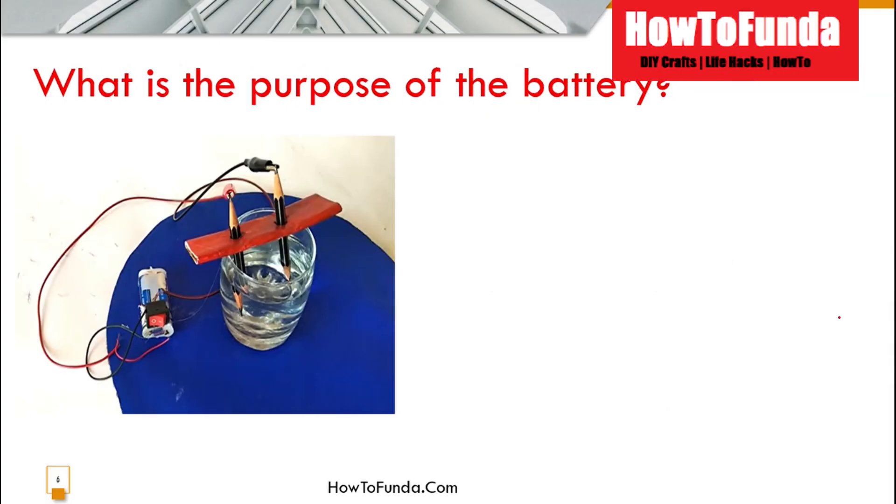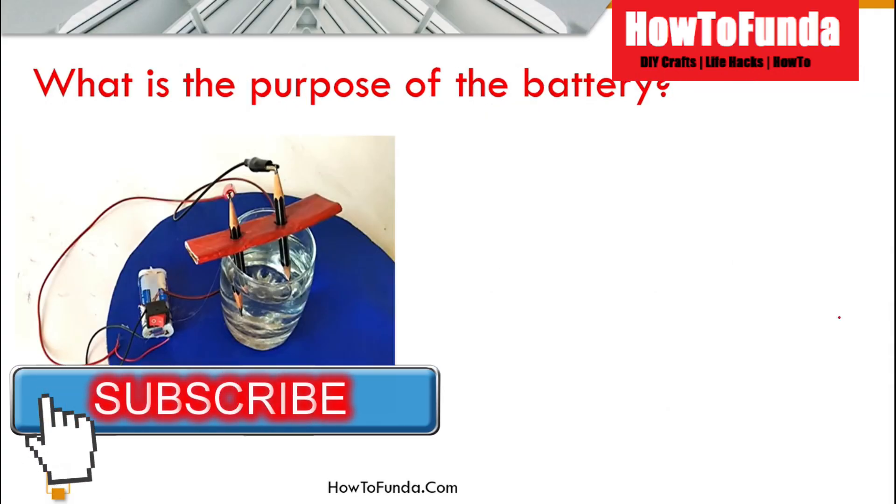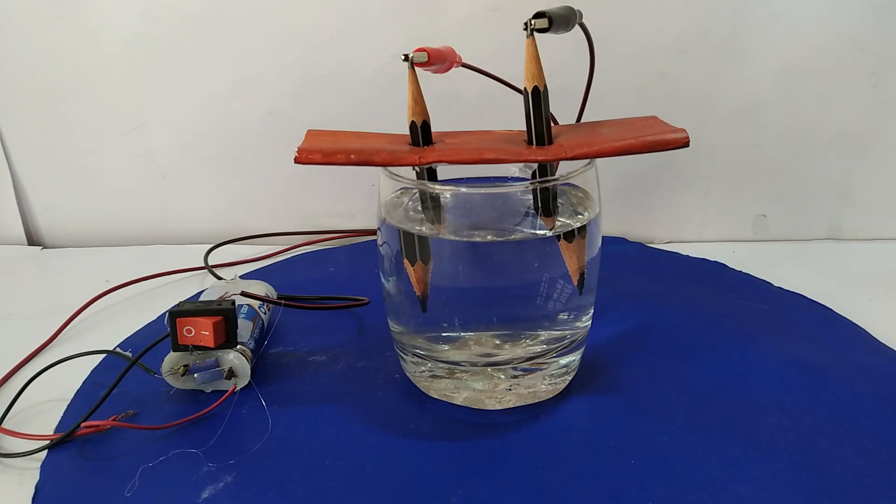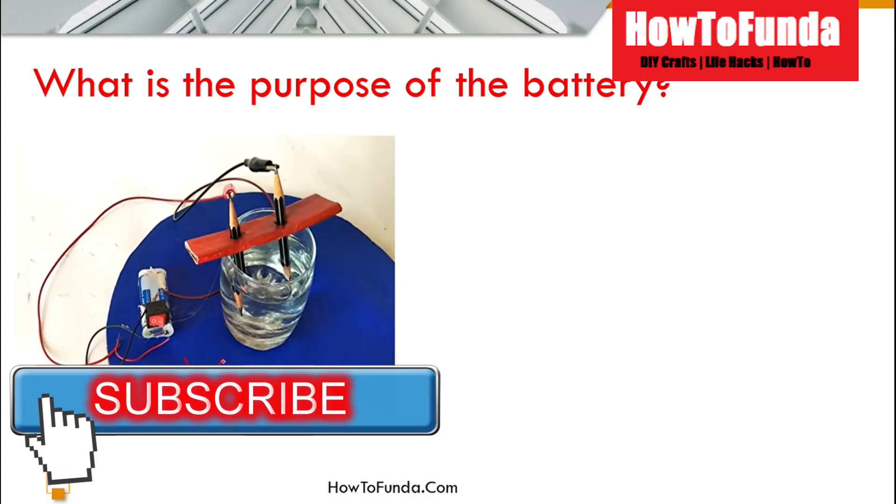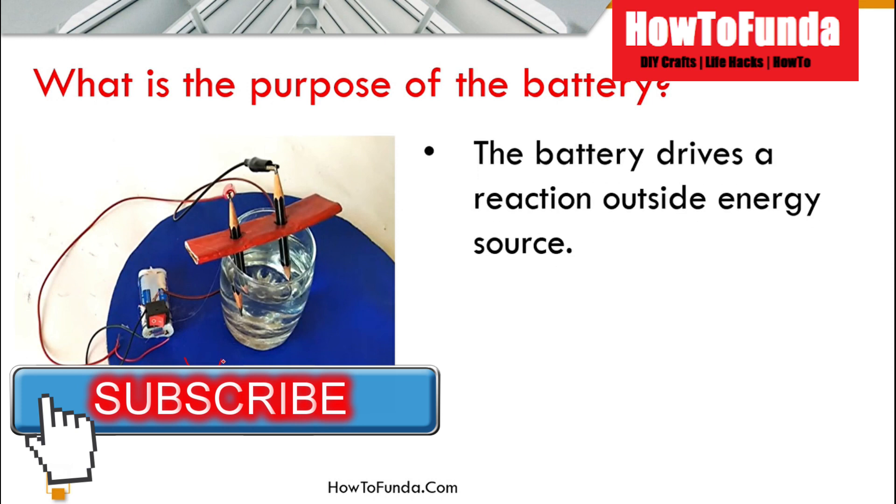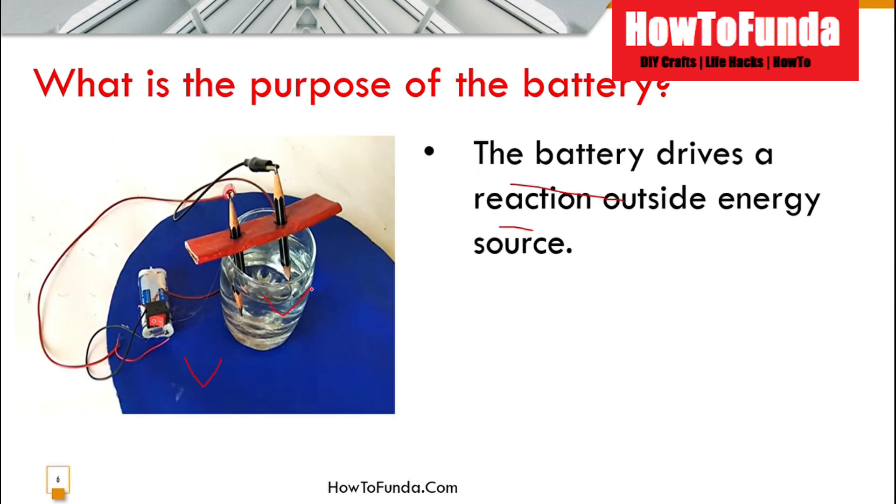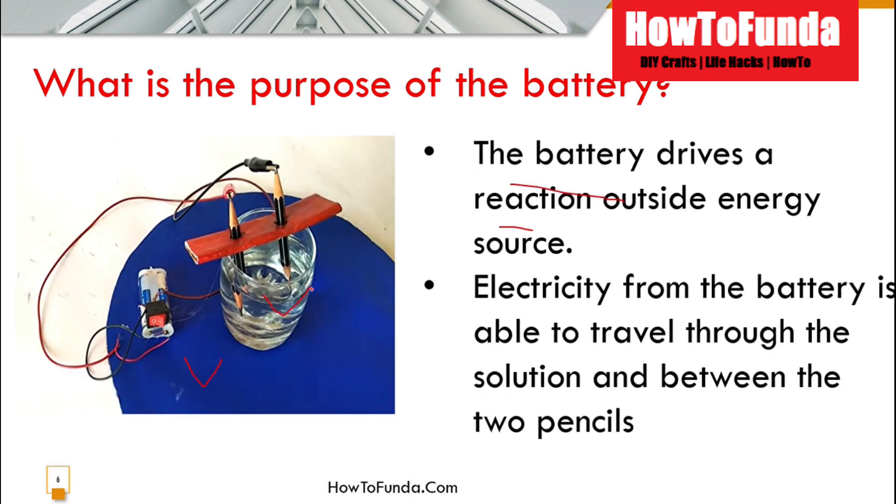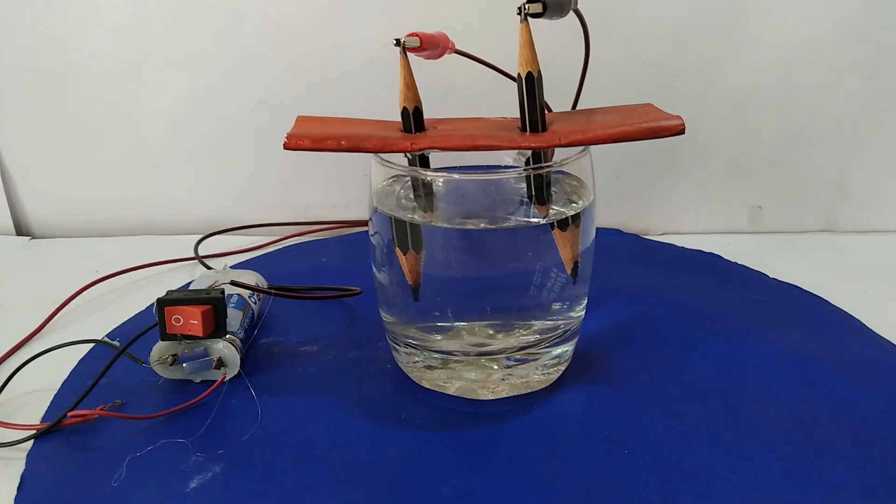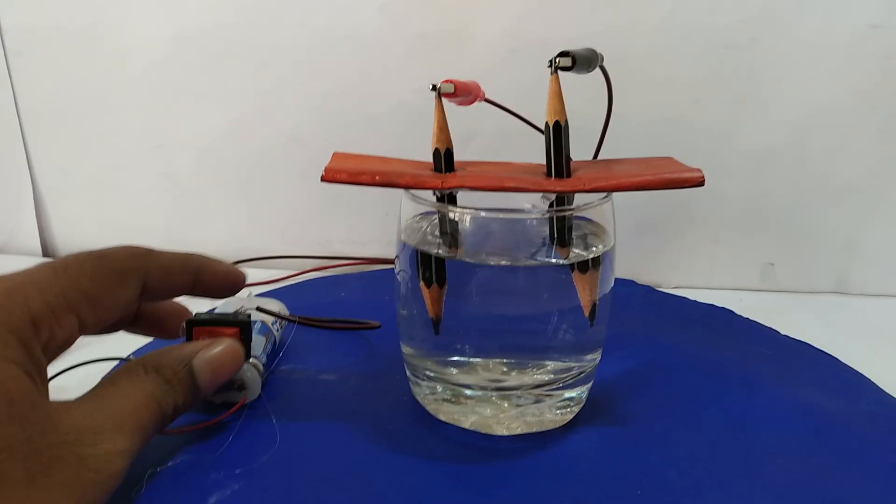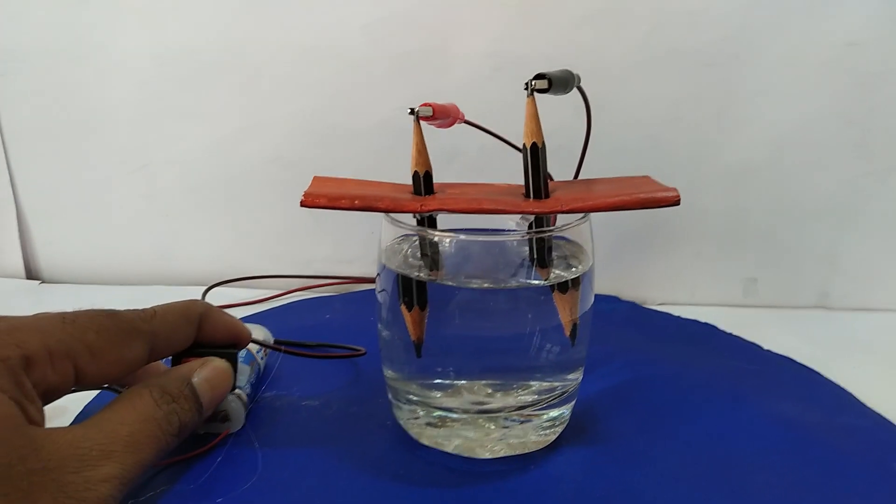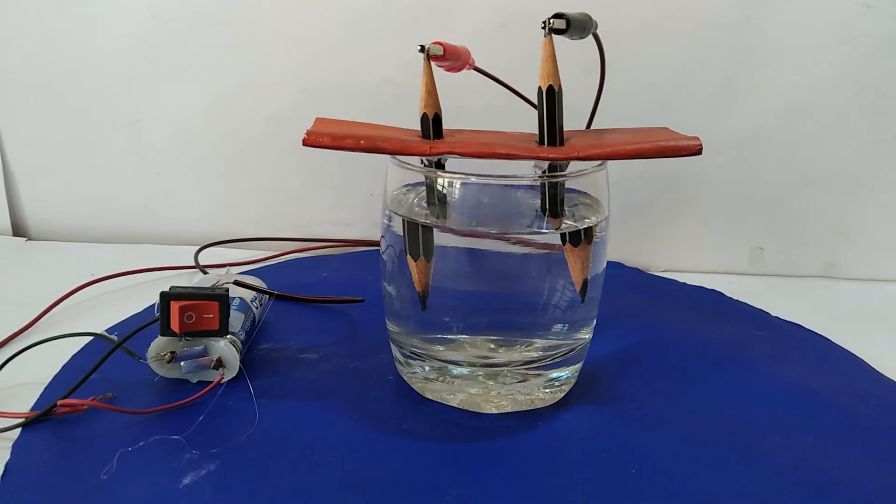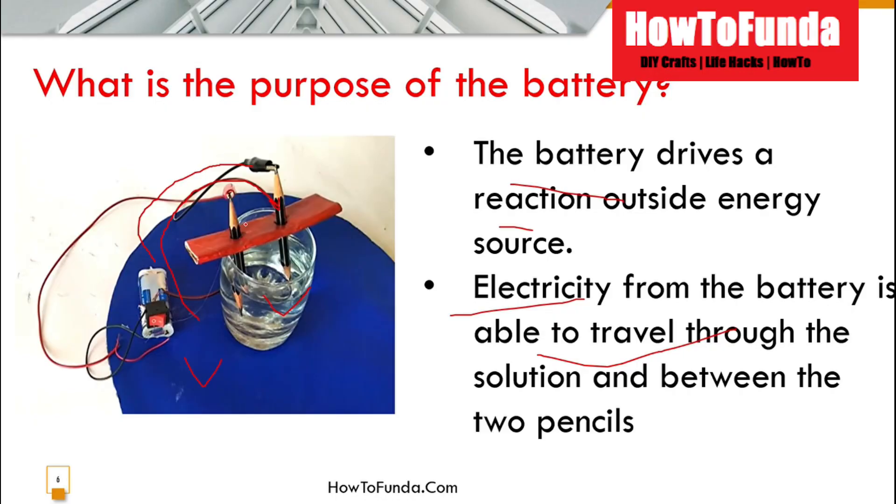What is the purpose of the battery? The purpose of the battery is to drive the reaction. The battery generates electricity and it travels through the two electrodes. Whenever we switch it on, the electricity moves from one electrode to another electrode. That's where electrolysis of water happens.